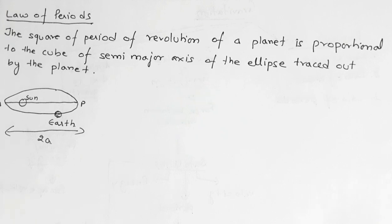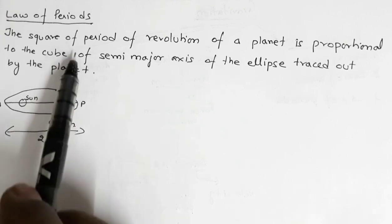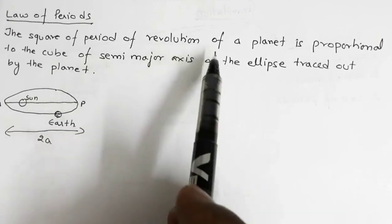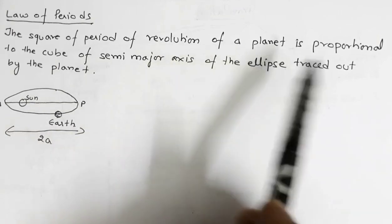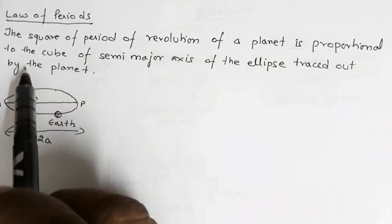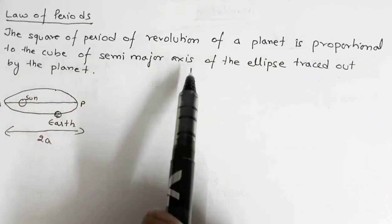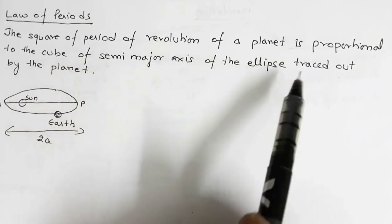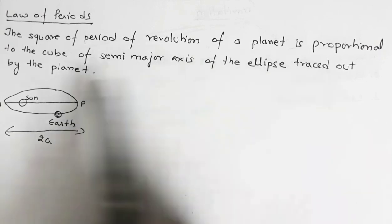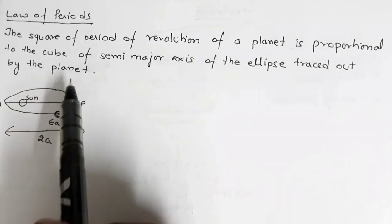The third law is the law of periods. It says that the square of the period of revolution of a planet is proportional to the cube of the semi-major axis of the ellipse traced out by the planet.